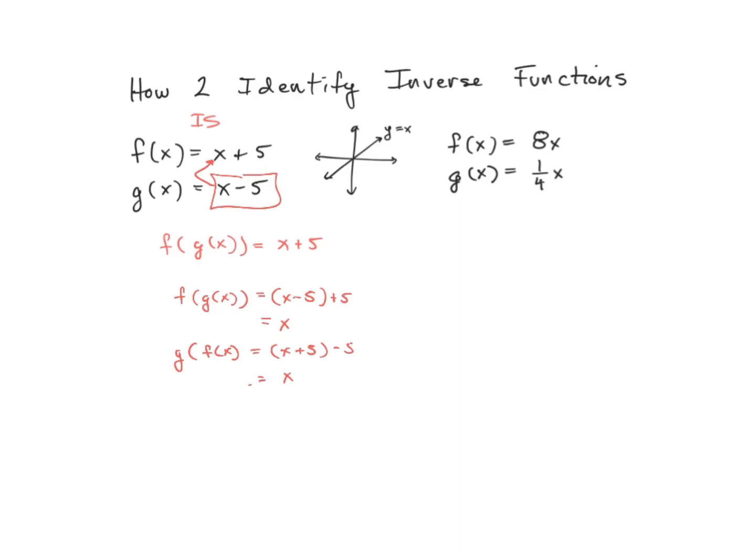Now maybe one that is not. If I just simply put my g of x into x here, I end up with f of g of x is equal to 8 times one-fourth x, which is 8 over 4x, which is 2x.